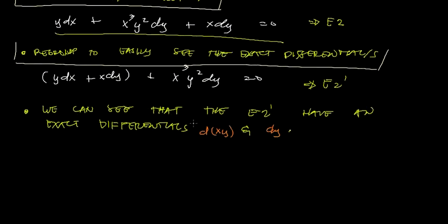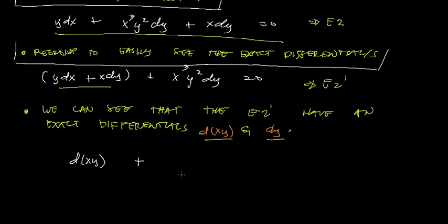As we can see in Equation 2 prime, we have the exact differentials — the derivative of xy and dy. So we can transform the grouped terms: d(xy) + x³y² dy = 0. We call this Equation 3. So we've identified d(xy) as our exact differential in this part of the equation.